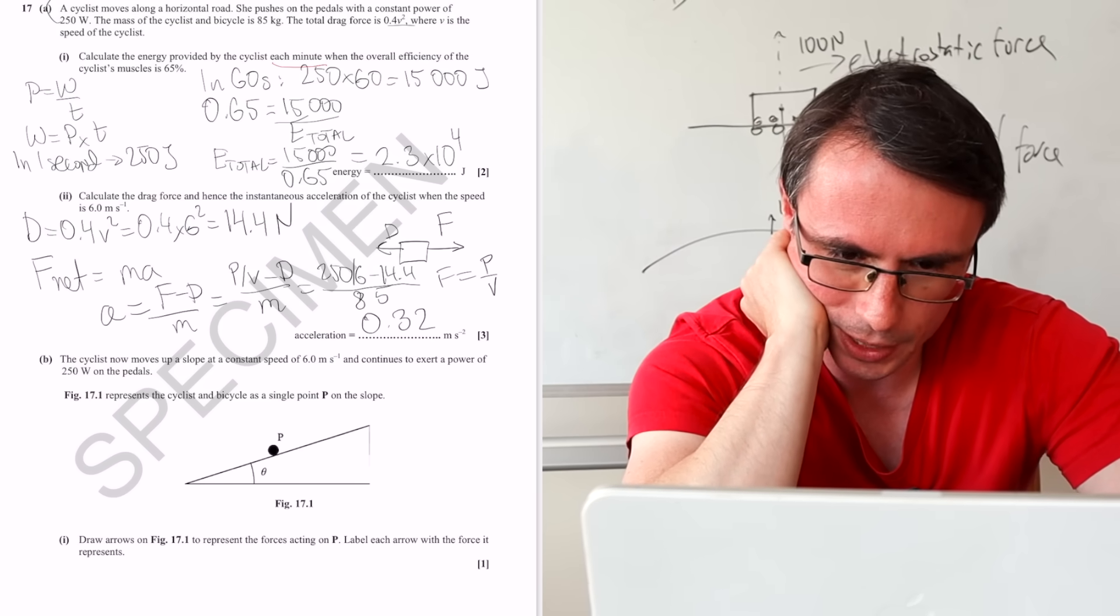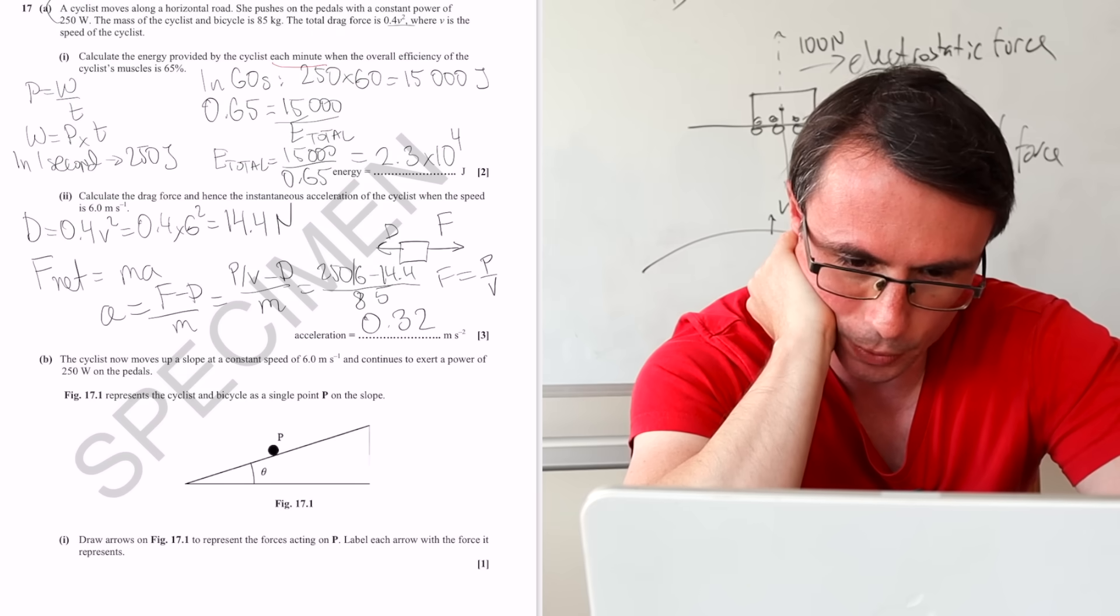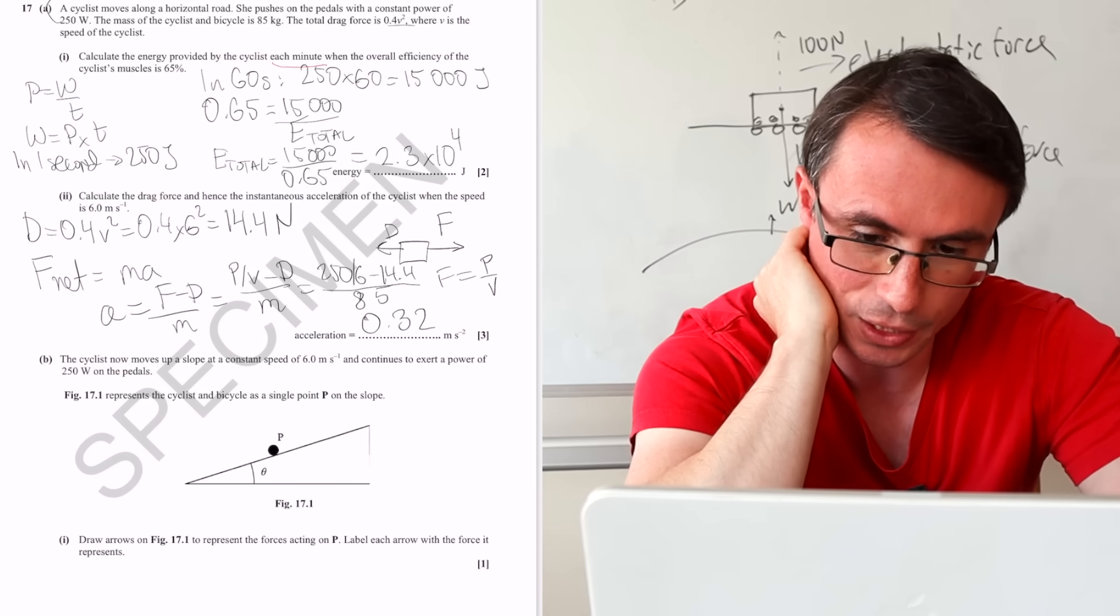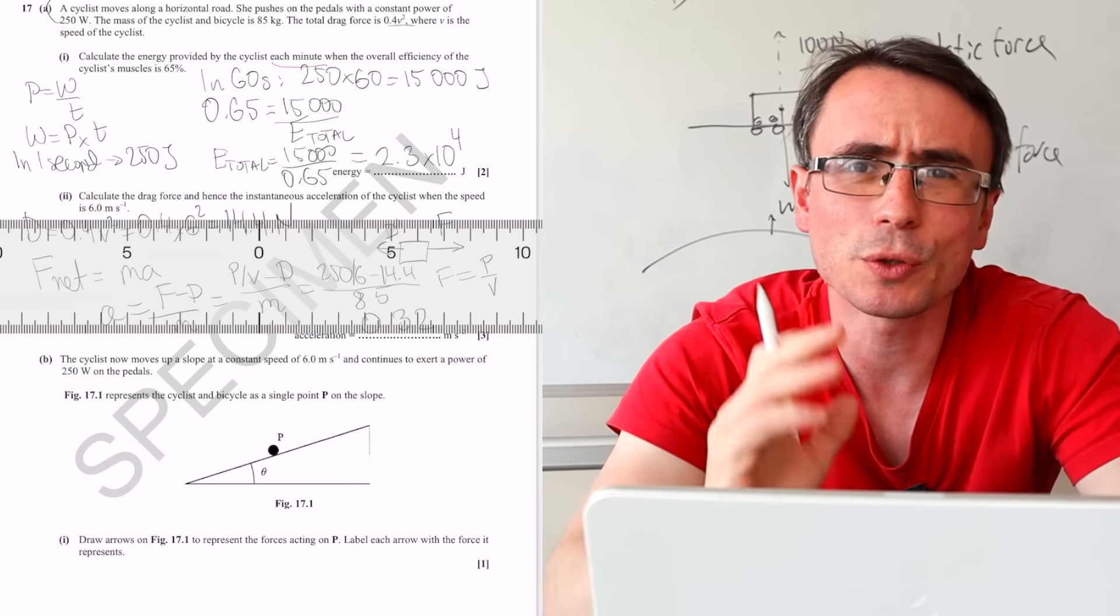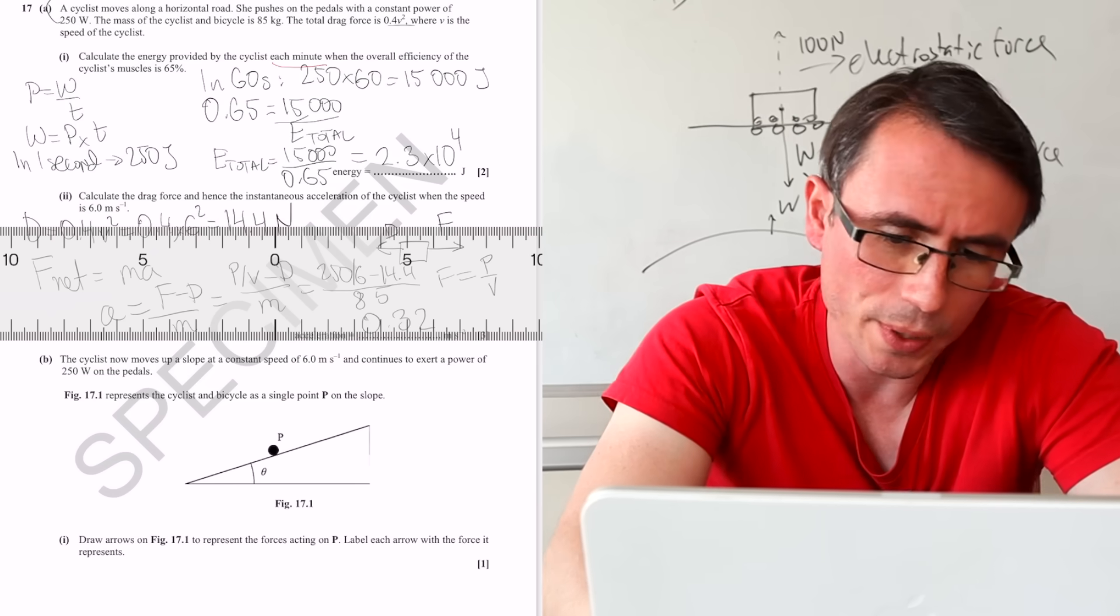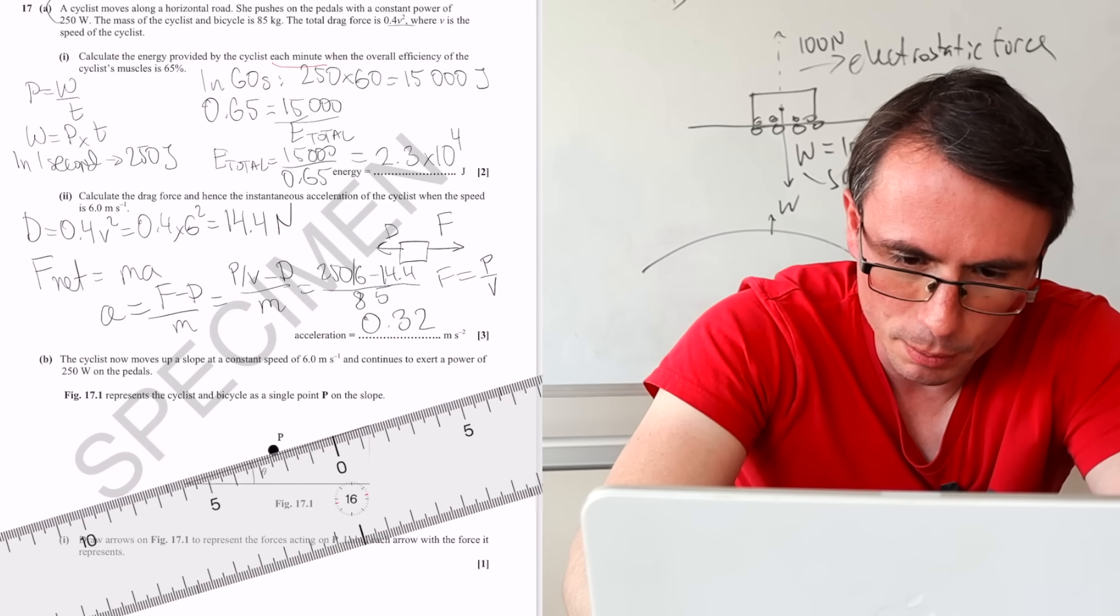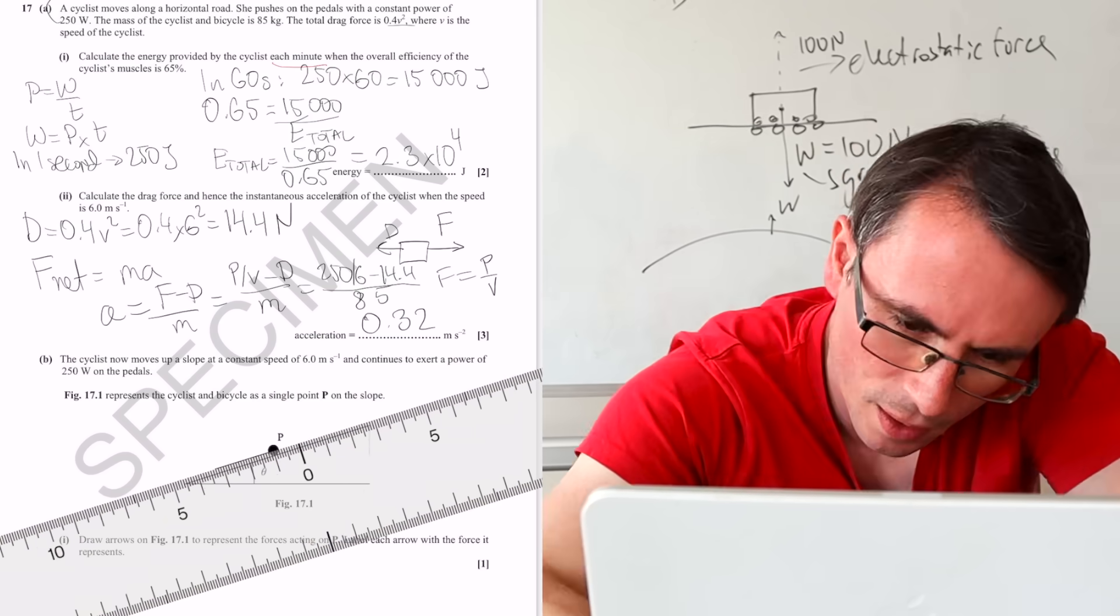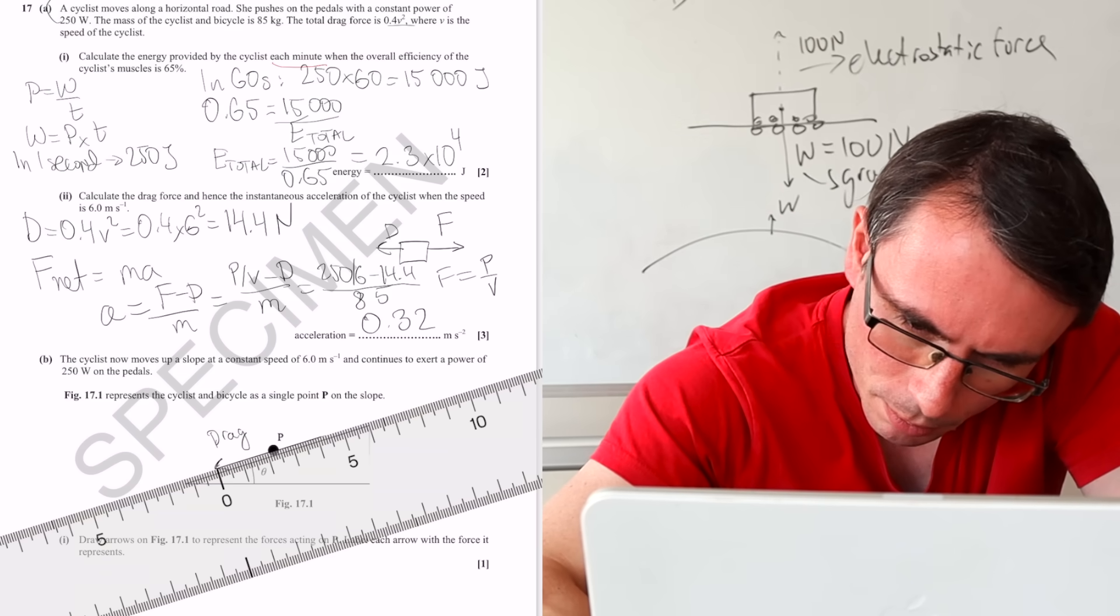Figure 17.1 represents the cyclist and the bicycle at a single point P on the slope. Draw arrows to represent the forces acting on P. Label each arrow with the force it represents. Remember, whenever we have to use arrows, please use a ruler. We're going to have some drag force which is opposing the motion, first of all.